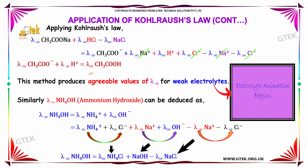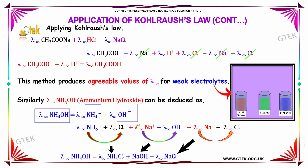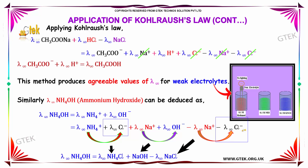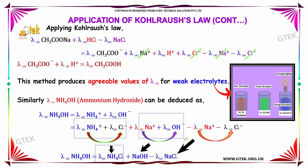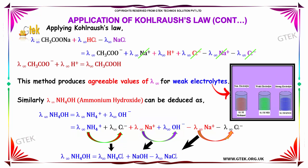Similarly, lambda infinity for ammonium hydroxide can be obtained in the same way. Ammonium hydroxide is treated as ammonia and hydroxide ions. We have lambda infinity of Cl⁻ terms that cancel, and sodium terms are added. After cancelling these two terms we get ammonium hydroxide. Once we add these terms we yield ammonium chloride, sodium hydroxide, and sodium chloride to ultimately obtain lambda infinity of ammonium hydroxide.